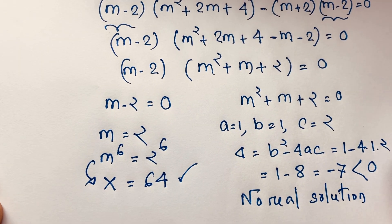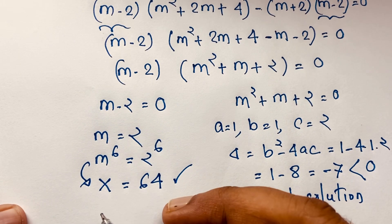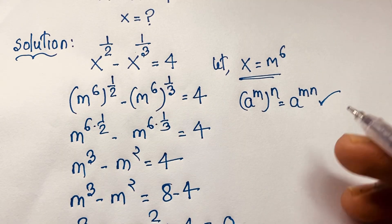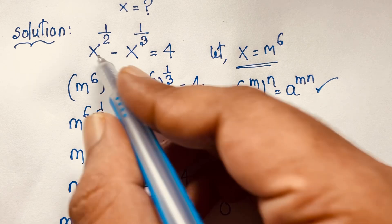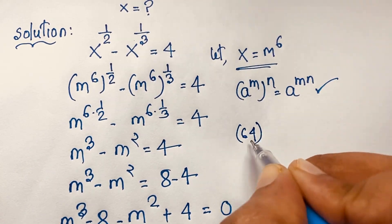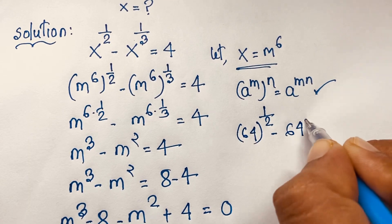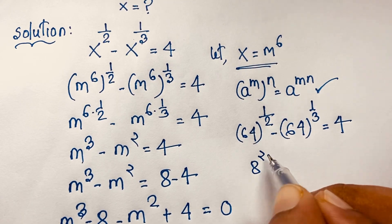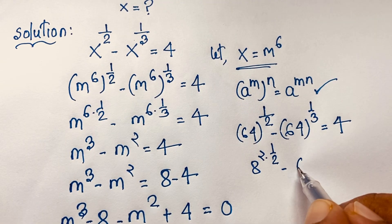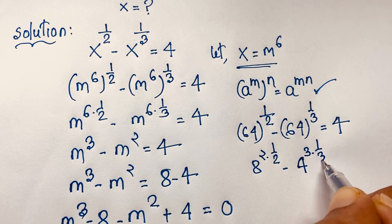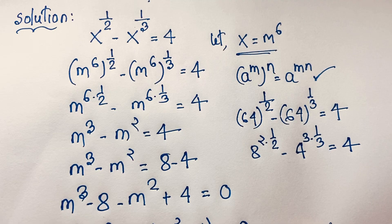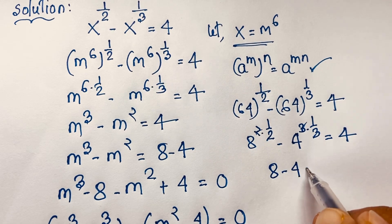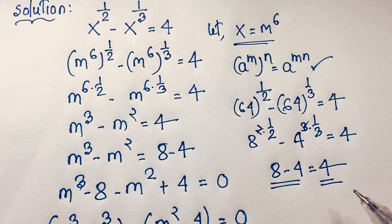This is our final answer: x equals 64. Let's verify: the original equation is x to the power half minus x to the power one third equals 4. Substituting x equals 64: 64 to the power half minus 64 to the power one third equals 4. Since 64 equals 8 squared, 64 to the half equals 8. Since 64 equals 4 cubed, 64 to the one third equals 4. So 8 minus 4 equals 4, and left hand side equals right hand side — verified.